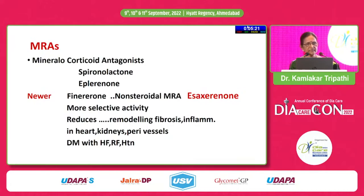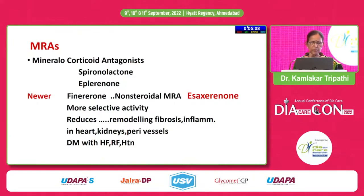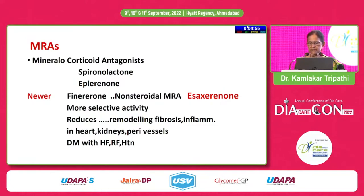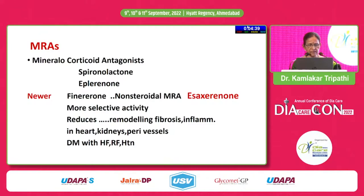When there is resistant hypertension and you have tried all this and the BP is still not controlled, we have to go for MRAs — mineralocorticoid receptor antagonists. We have been using spironolactone and eplerenone. This new drug is finerenone — a non-steroidal MRA — with extensive trials ongoing. Another one, esaxerenone, has been approved in Japan. It has more selective activity, reduces remodeling, fibrosis, and inflammation in the heart, kidneys, and peripheral vessels, and is therefore preferred in diabetes with heart failure, renal failure, and hypertension.